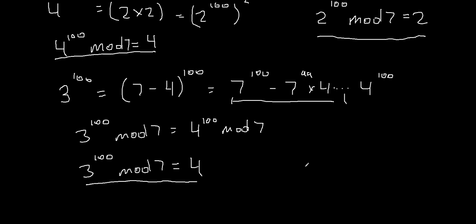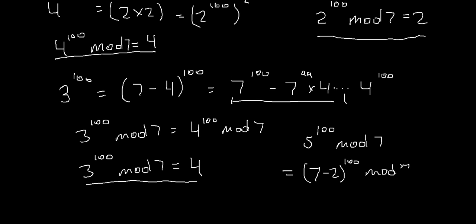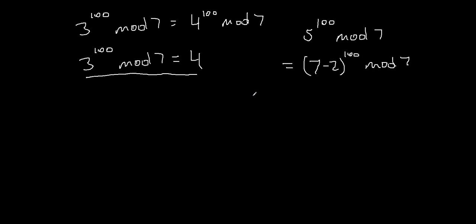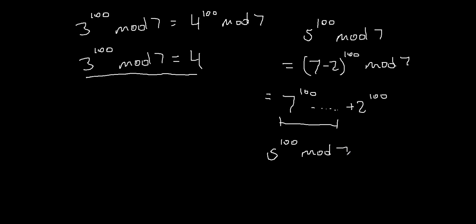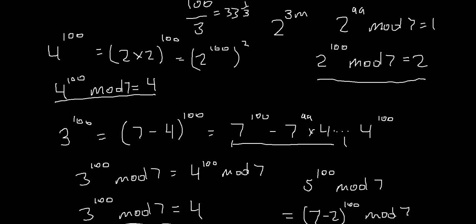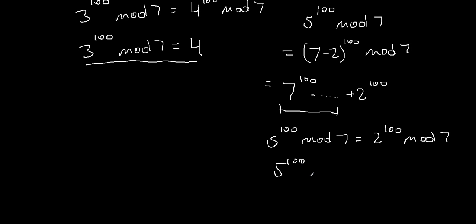For the last part, we'll do the same for 5. So 5 to the power of 100 mod 7 — what is 5? Well, 5 is just 7 minus 2, right? So we rewrite it as 7 minus 2 to the power of 100 mod 7. If you expand that out again, you get 7 to the power of 100 minus some middle terms, and at the end you get plus 2 to the power of 100. All the other stuff is again divisible by 7. So 5 to the power of 100 mod 7 is just equal to 2 to the power of 100 mod 7, which is 2.